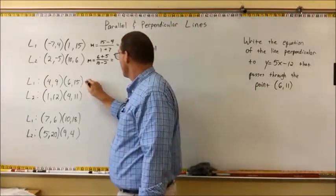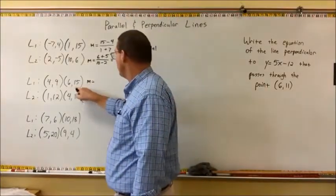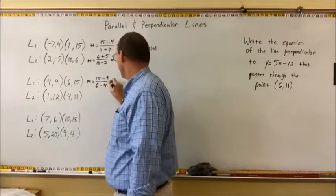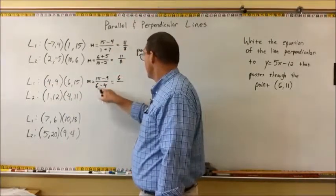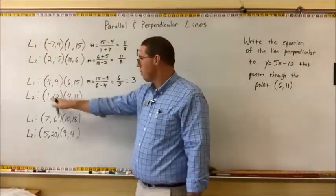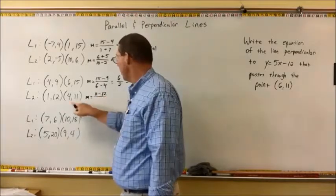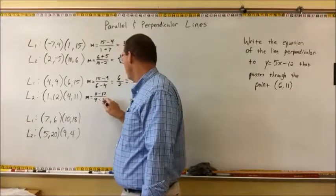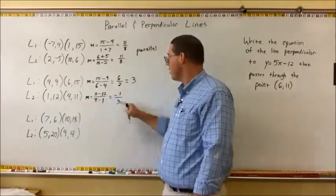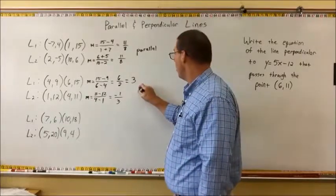For the next pair: the first line through points (4, 9) and (6, 15) has slope m equals 15 minus 9 over 6 minus 4, which is 6 over 2 equals 3. The second line through points (1, 12) and (4, 11) has slope m equals 11 minus 12 over 4 minus 1, which is negative 1 over 3. Since negative one-third is the negative reciprocal of 3, these two lines are perpendicular.